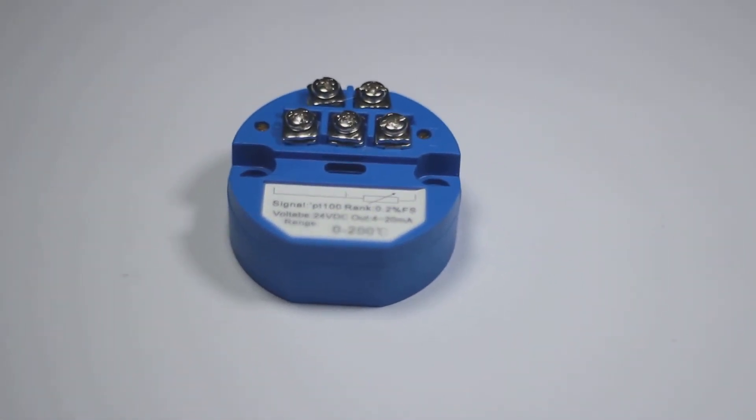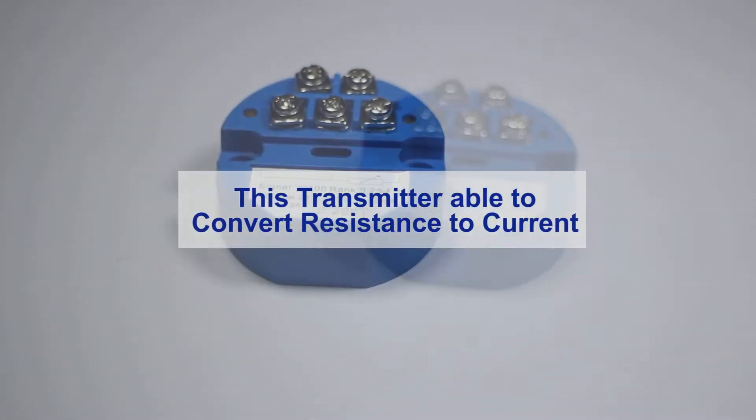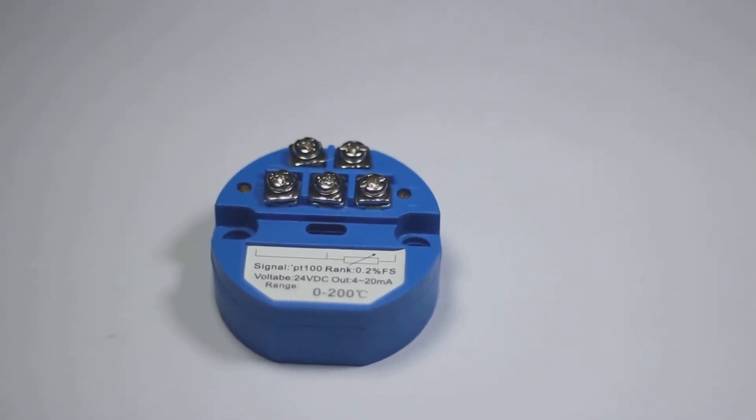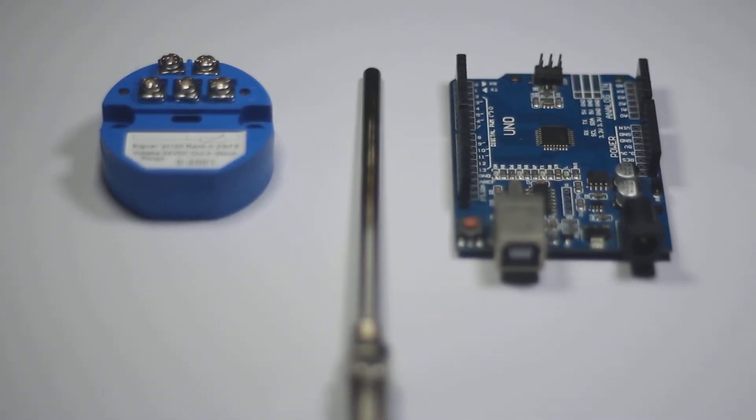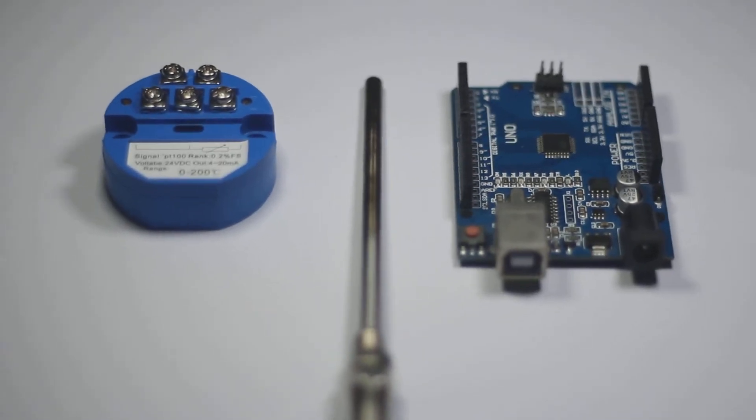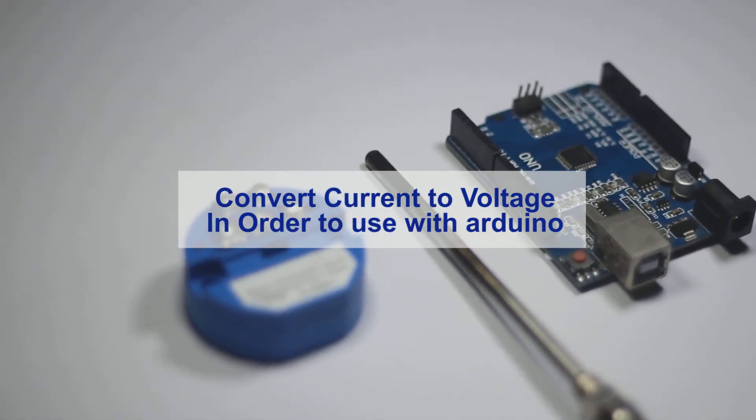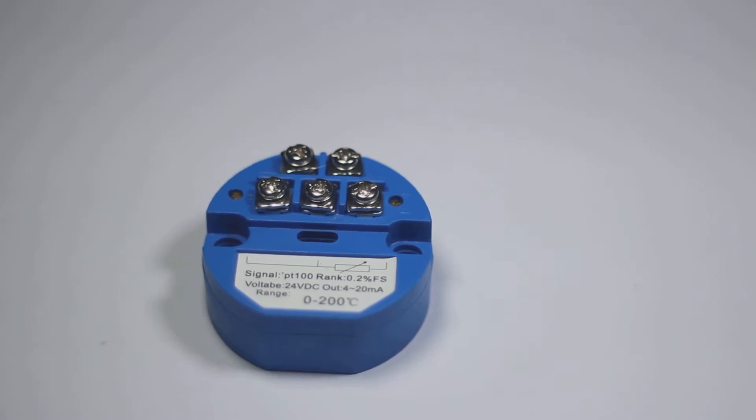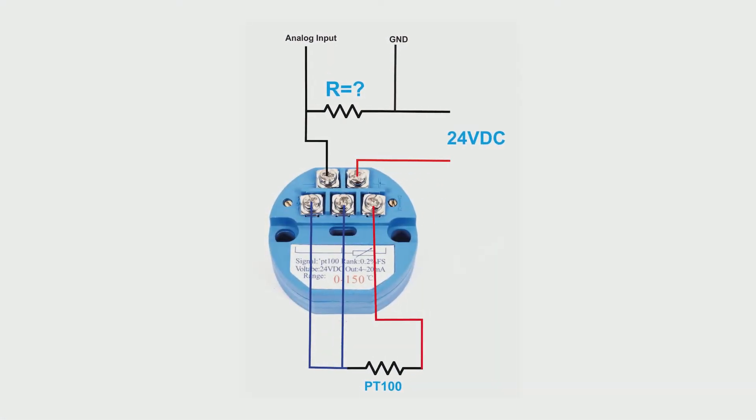This device has the ability to convert the resistance to current, so you can directly connect to a PLC in case you want to use PLC. But if you want to use microcontroller or Arduino, we need to convert the current to voltage, since Arduino is only able to read voltage with ADC. To convert the current to voltage, we need a resistor. So just put a resistor in this transmitter output and we can get the voltage difference.